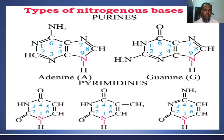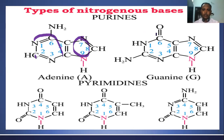Purine bases have two rings — a six-member ring and a five-member ring. There are two types of purine bases: adenine and guanine. Purines contain four nitrogen atoms in their rings, whereas pyrimidines contain only two nitrogen atoms.